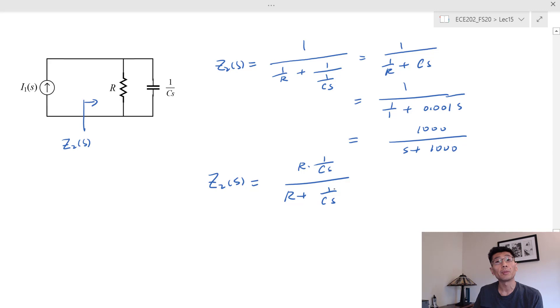In this case, I'm using the impedance, the product of two impedances and the sum of these two impedances. In this case, I multiply by Cs, and I got R/(RCs + 1).